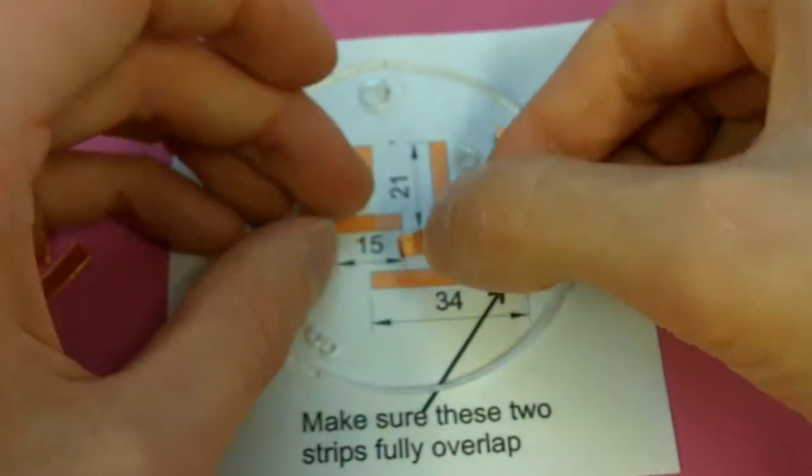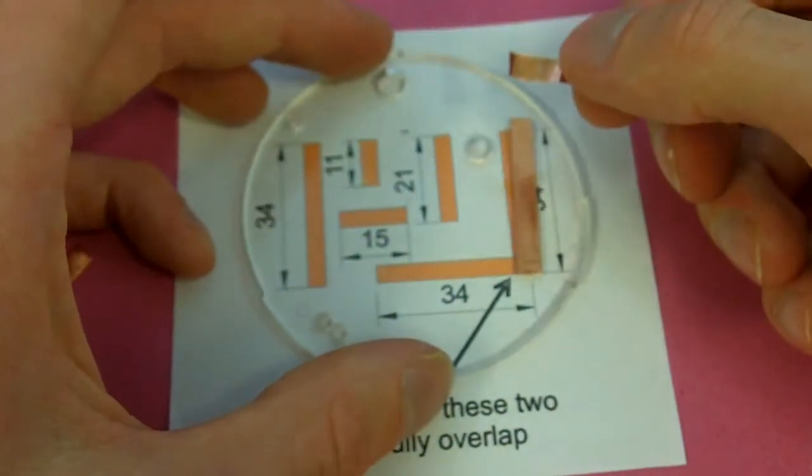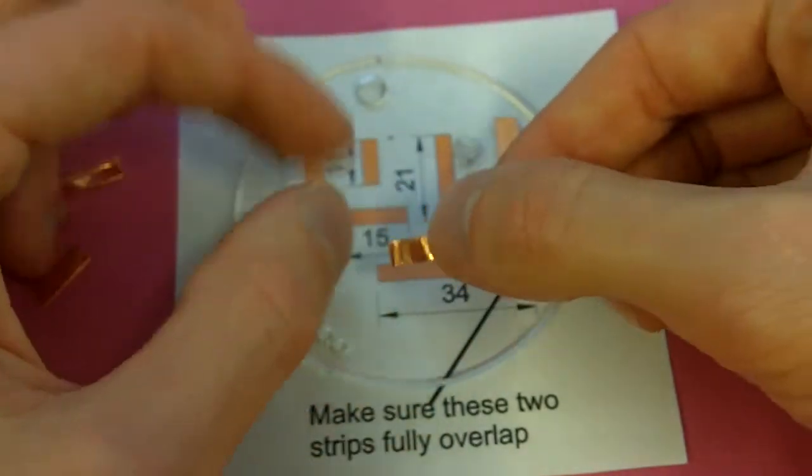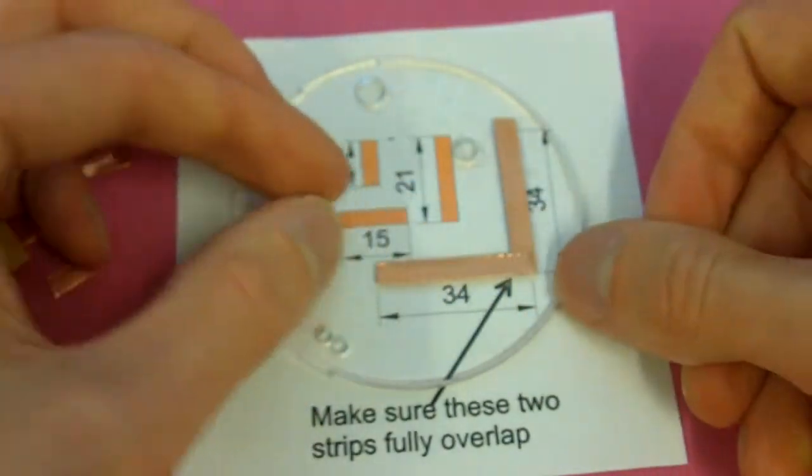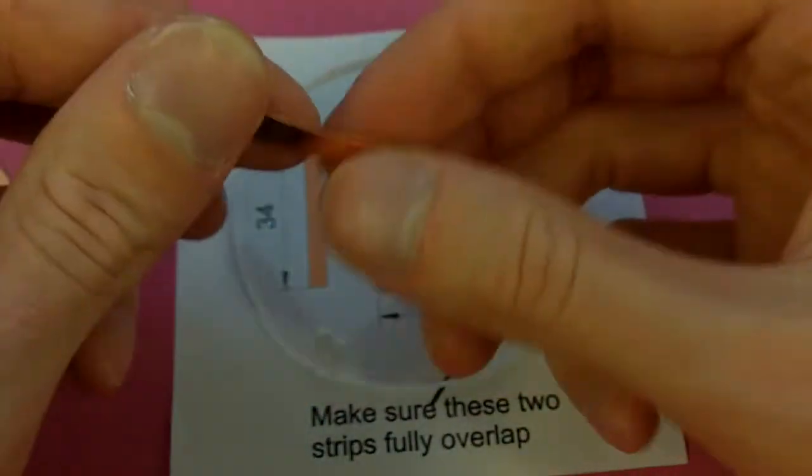Roll it back, stick it down. Try and keep it as lined as possible. If it does go out, just make sure we keep them on, like so. Now you need to do that with every single bit of tape.